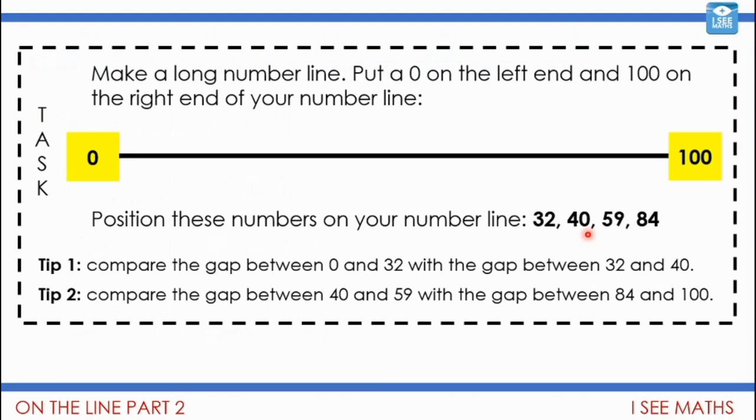Now that's going to be useful because this is your task. You're going to draw a number line, a nice long number line between 0 and 100. Now see if you can cut out little bits of paper with 32, 40, 59 and 84 on and then move them around until you get the position of those numbers exactly right in comparison to one another.